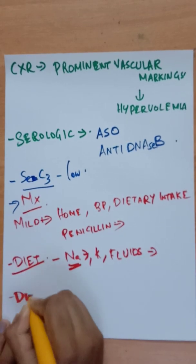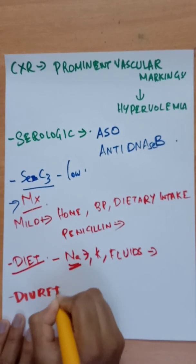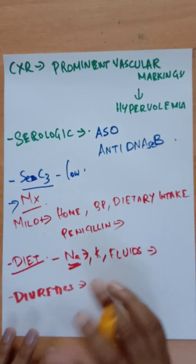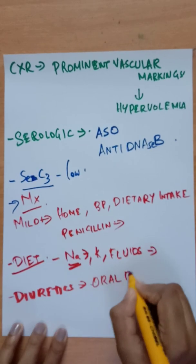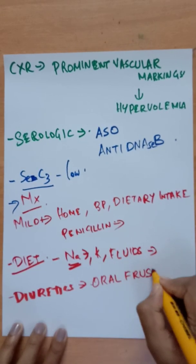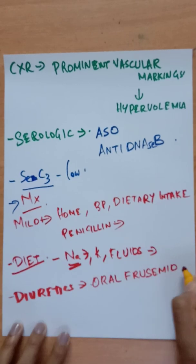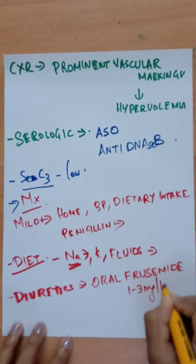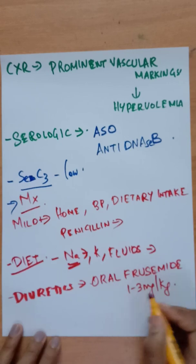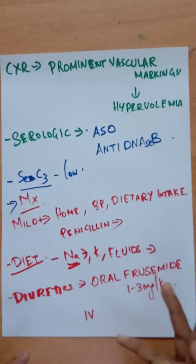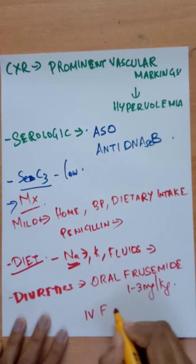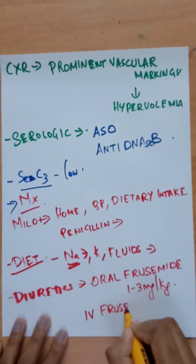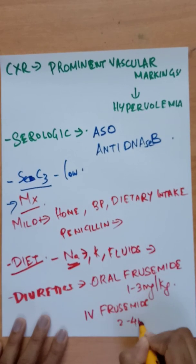For diuresis: if there is moderate edema, oral furosemide can be given at a dose of 1–3 mg/kg. If there is severe pulmonary edema, IV furosemide is given at a dose of 2–4 mg/kg.